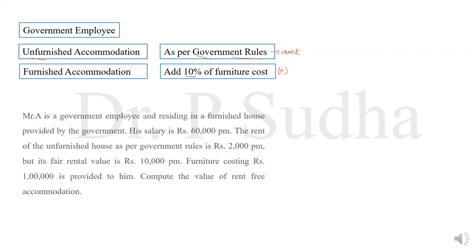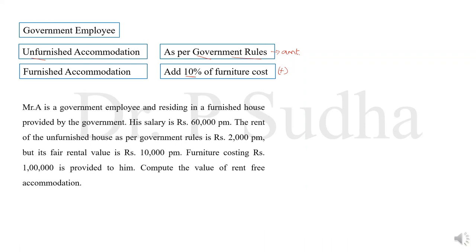We shall now work out a problem with this condition. Mr. A is a government employee and is residing in a furnished house. His salary is 60,000 per month. The rent of the unfurnished house as per government rules is 2,000 per month. Furniture costing rupees 1 lakh is provided to him. We have to calculate the value of rent-free accommodation.